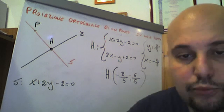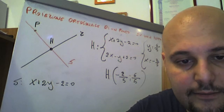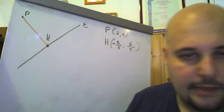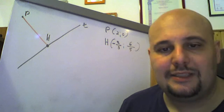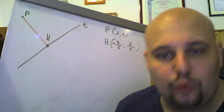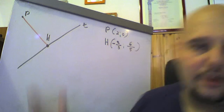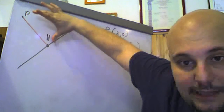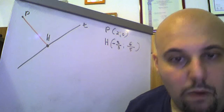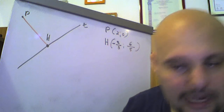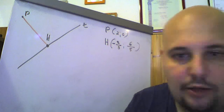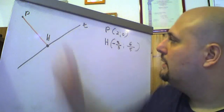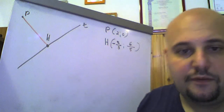Parliamo adesso di distanza di un punto da una retta. Abbiamo definito cosa si intende per proiezione ortogonale di un punto P su una retta R, il punto H. Vogliamo calcolare la distanza PH. Facciamo vedere, non con una dimostrazione rigorosa, ma mostrando che i due risultati coincidono, che possiamo applicare due formule differenti.